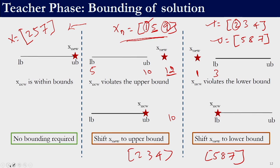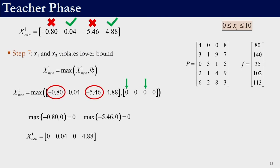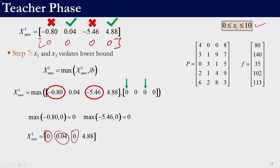Our generated solution was minus 0.8, 0.04, minus 5.46, and 4.88, with domain [0, 10]. We can see that x1 and x3 violate the lower bound. Using the max operator: max(minus 0.8, 0) = 0, max(0.04, 0) = 0.04, max(minus 5.46, 0) = 0, and max(4.88, 0) = 4.88. So the bounded solution is (0, 0.04, 0, 4.88). The two variables that did not violate bounds are retained as-is.